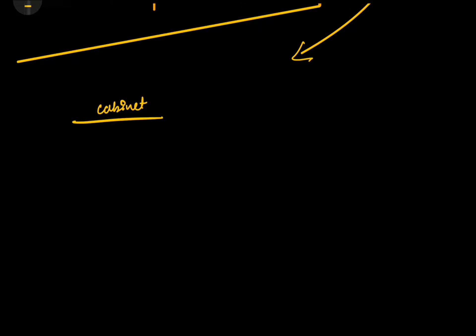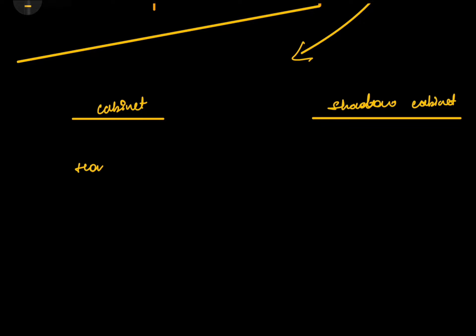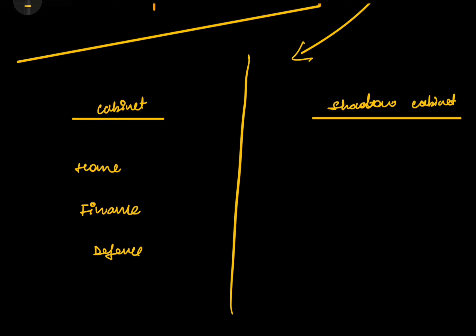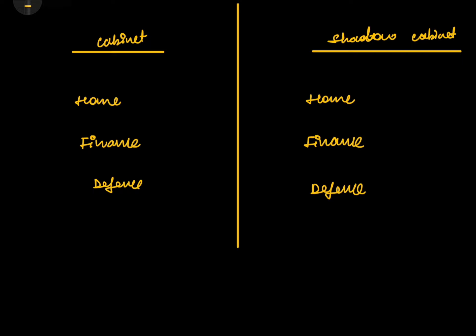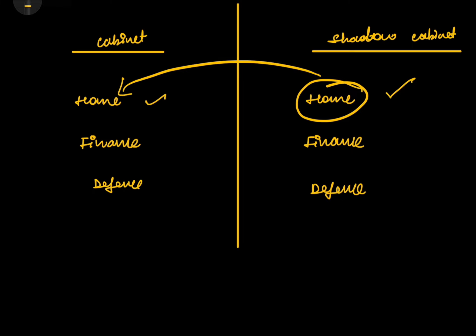The government in power has a cabinet, and the opposition has a shadow cabinet. There are important portfolios in the cabinet — like Home, Finance, and Defence. The shadow cabinet mirrors these: they will have a Home portfolio, Finance portfolio, and Defence portfolio. So they completely mirror the functioning of the cabinet, appointing their own members as heads of the corresponding portfolios.